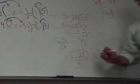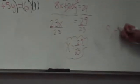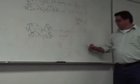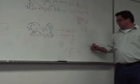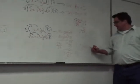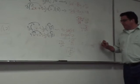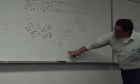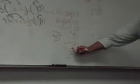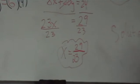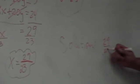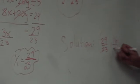So what's our solution? X is 29/23rds. Our solution is the point (29/23, 16/23).